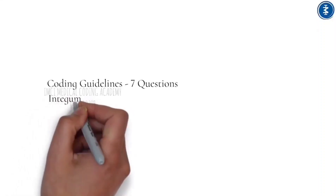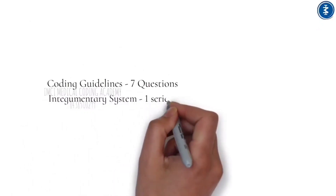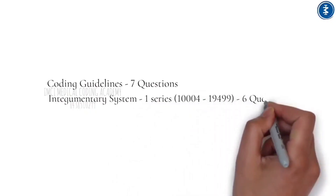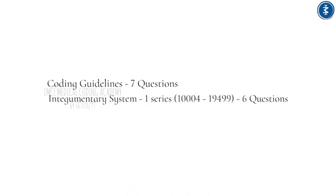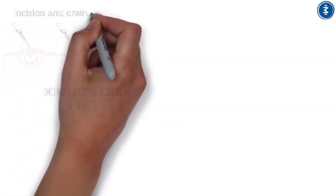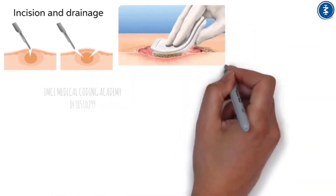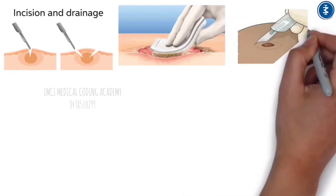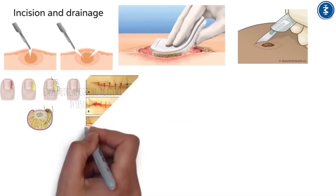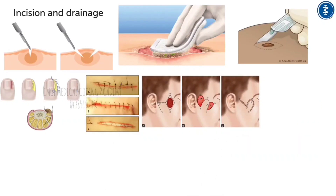The Integumentary System (Chapter 1, codes 10004–19499) contributes 6 questions. This chapter covers physician skin, nail, and hair surgeries including incision and drainage, wound debridement, skin lesion excision, nail trimming, skin repair, adjacent tissue transfer or rearrangement, and graft and flap procedures.